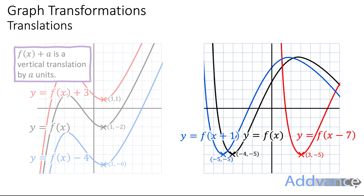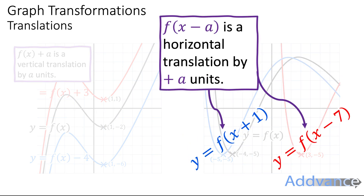f of x plus 1 moves it to the left by 1 square. Notice that this time we are changing the x-coordinate — the x-coordinate has gone backwards by 1 here, and the x-coordinate has gone up by 7 here. So f of x minus a is a horizontal translation by plus a units. Because we're going minus with a, we're going up by a units, and if it was x plus a, we would go down by a units.